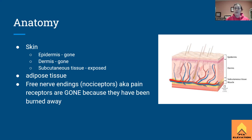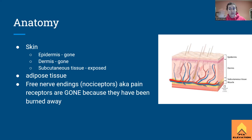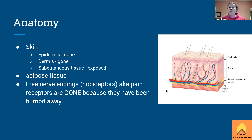Our free nerve endings — the nociceptors, our pain receptors — are also gone with a full thickness burn. This is very important: because the nerves are destroyed, the full thickness burn is painless. With a second degree partial thickness burn, the nerve endings are still there, but with a full thickness burn they've been burned away completely.